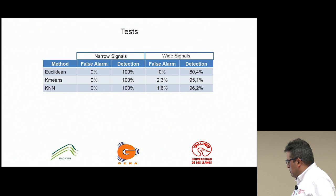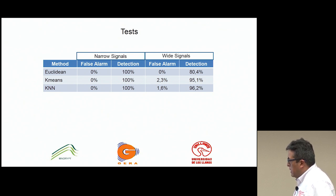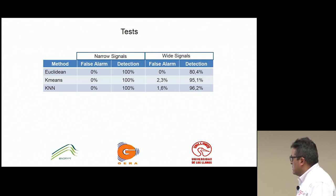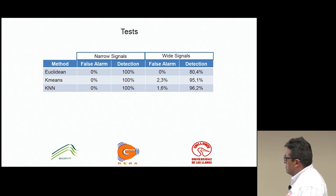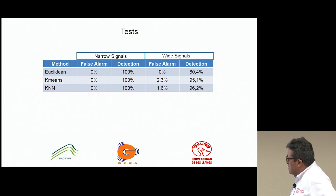These were the results I got. With the Euclidean method, for narrow signals it was very good — there was no problem with narrow signals with any of the methods. The problem was with wide signals. For the Euclidean distance, performance was 80%. For K-means, the detection percentage was 95% with a false alarm rate of 2.3%. For KNN, the false alarm was 1.6% and the detection percentage was 96.2%.